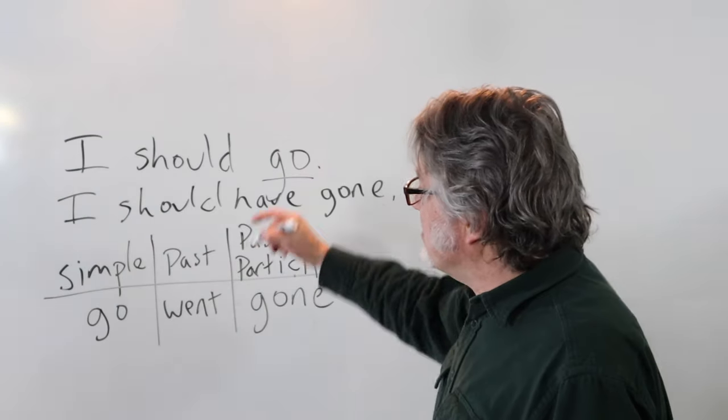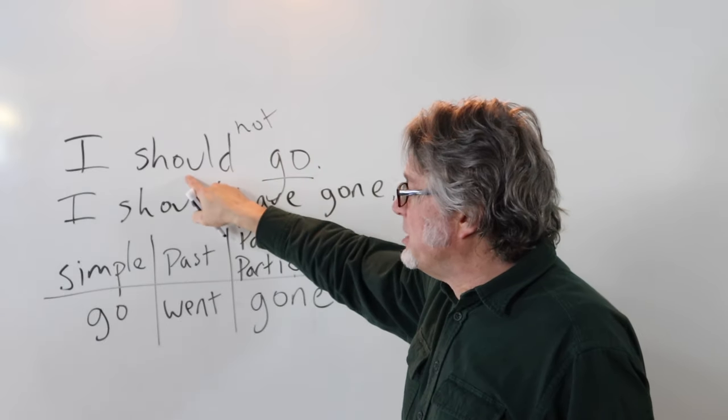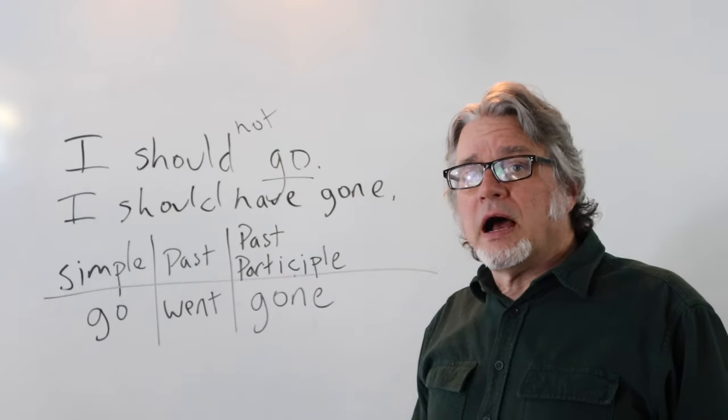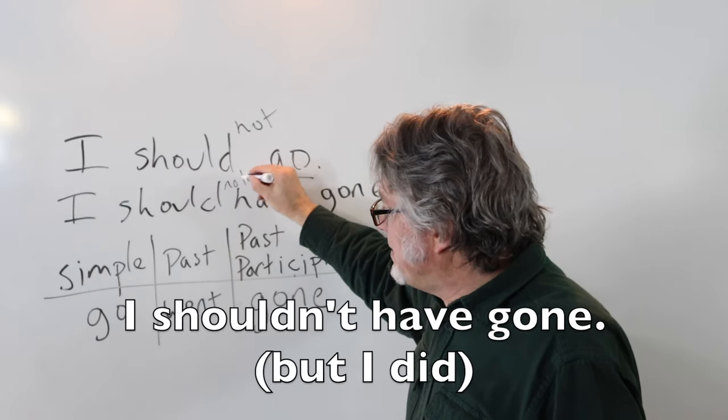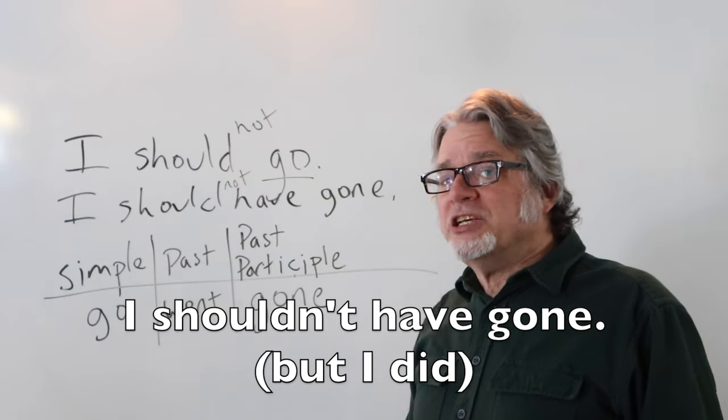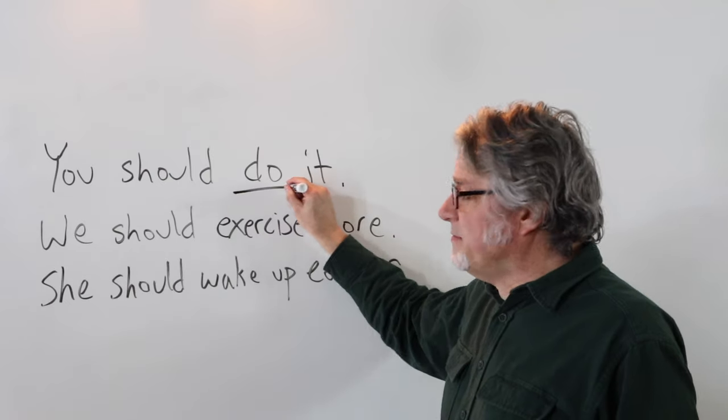To make this negative, just put not here. I should not go or I shouldn't go. You should do it. Here's the main verb.